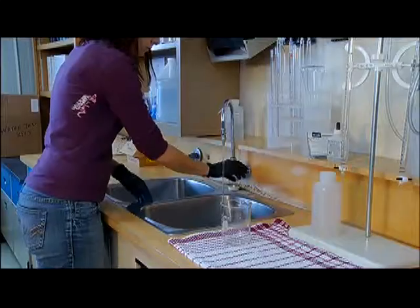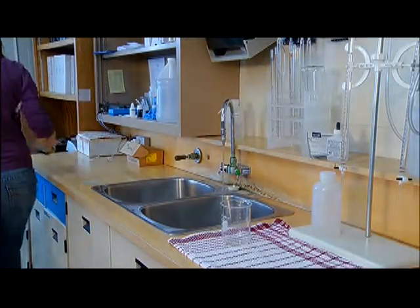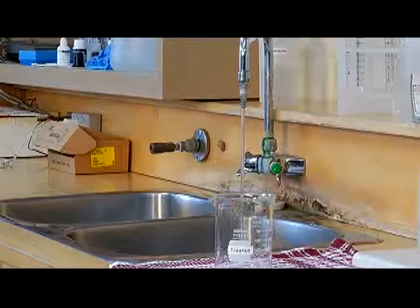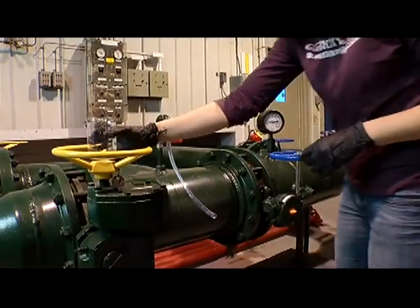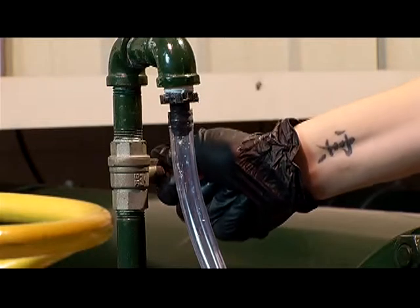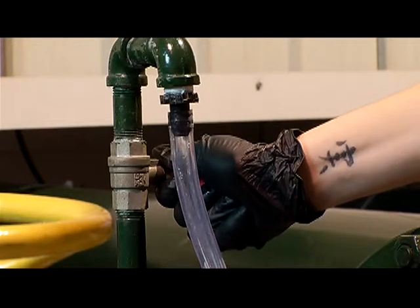In obtaining a representative grab sample, prepare the designated sample taps per the procedure for conducting a pH test. This requires testing the pH on a sample of treated water, as well as testing a sample obtained from a designated raw water sampling point within the plant.